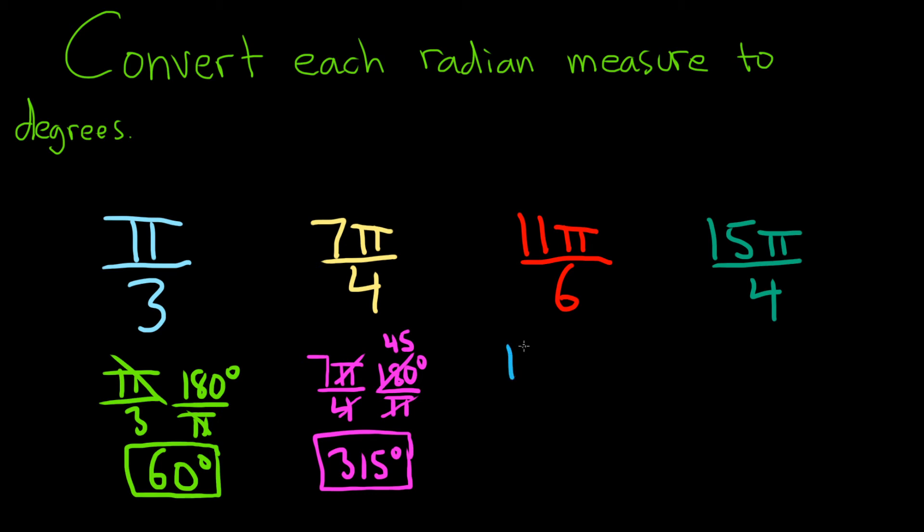Here, same thing. We have 11 pi over 6, and we're multiplying it by 180 degrees over pi. The pi's cancel. 6 goes into 180 30 times, and 30 times 11 should be 330. I'm not going to take a chance—yep, 330 degrees. Good stuff.